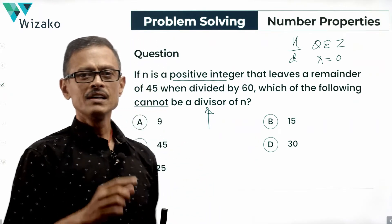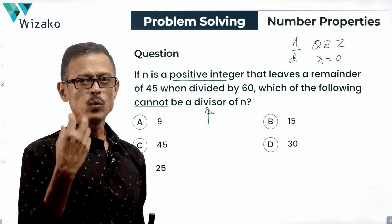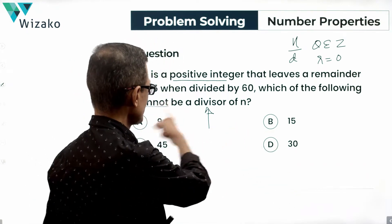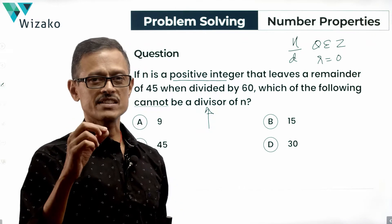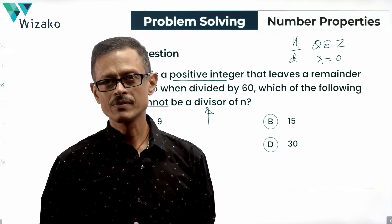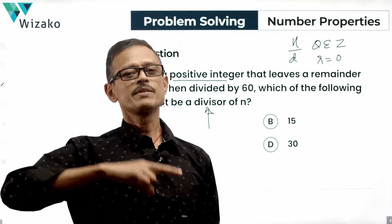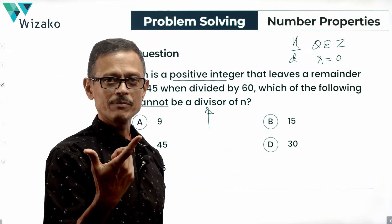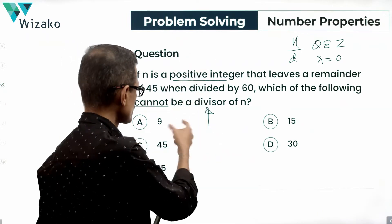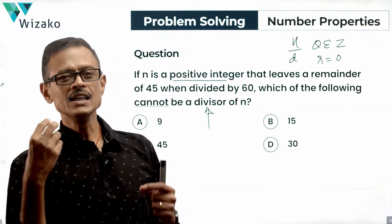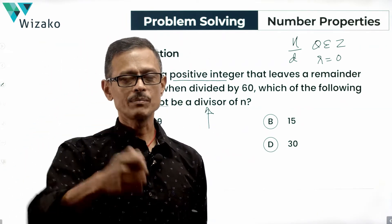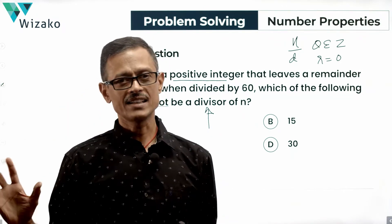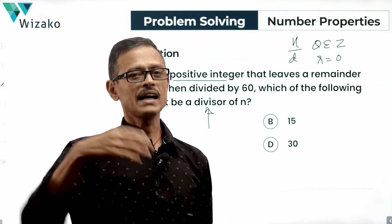We're going to be solving this question in two ways. If you are able to deduce something about the properties of n and therefore arrive at the answer, you can solve this question in probably 20 seconds. If you do not figure this out, you're going to be solving it using method 2, where we'll essentially see if we can find one example where n is divisible by 9, divisible by 45, or divisible by 30. If we find one example where it's divisible by that number, that is not the answer. The second method is going from answer options.